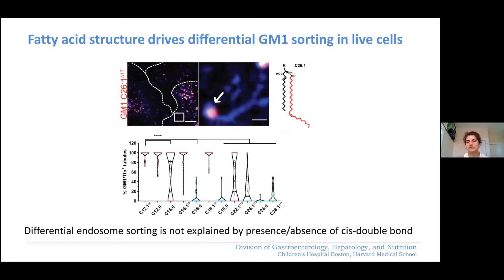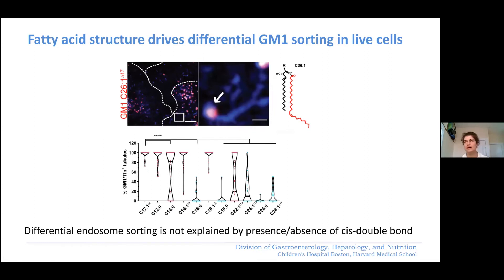So there seems to be a difference between in vitro and in vivo behavior. Similarly, GM1 C24:1 also cannot enter recycling endosomal tubules, as seen in the quantification. But GM1 C12:0 — saturated but short — nicely co-localizes to recycling endosomal tubules. So in a cell, it's not as simple as just the presence or absence of a cis double bond that determines subcellular behavior.